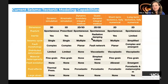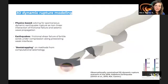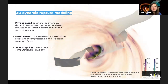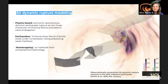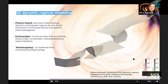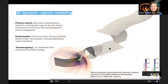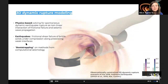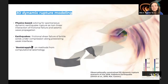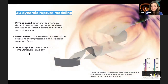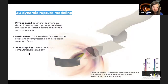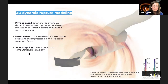3D dynamic rupture modeling is called physics-based because we solve spontaneous dynamic earthquake rupture as a non-linear interaction of frictional failure and seismic wave propagation. Earthquakes in this framework are treated as friction shear failure of brittle solids under compression along pre-existing weak interfaces. We use methods from computational seismology, though these methods were often not developed for modeling large offsets or large deformations caused by earthquake sources.